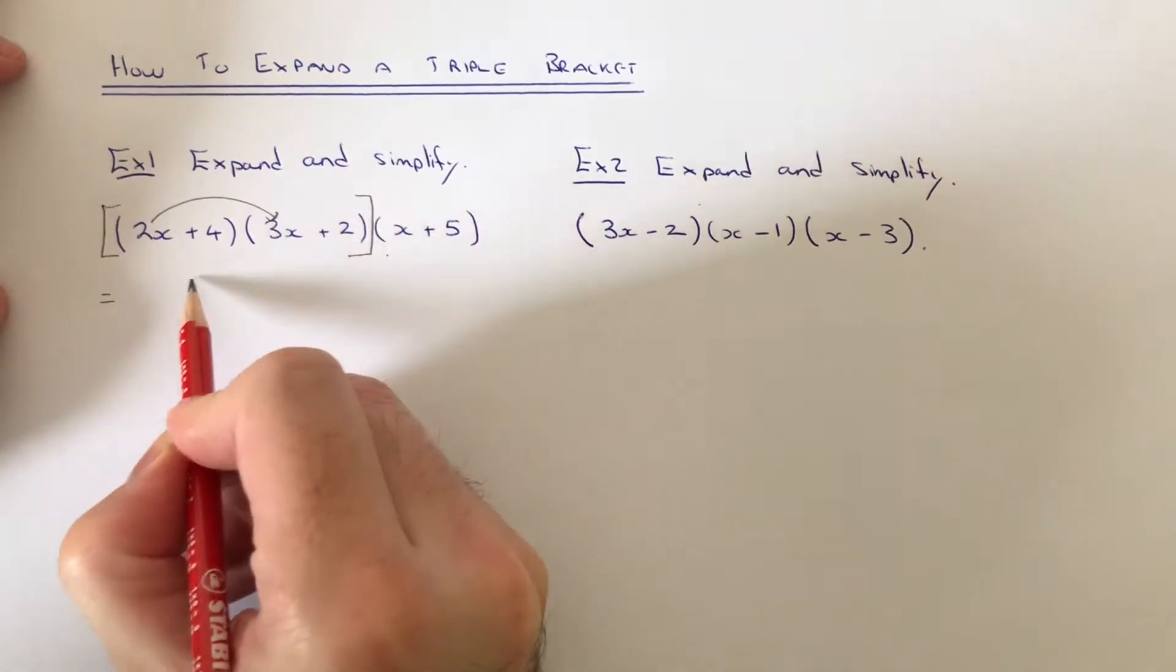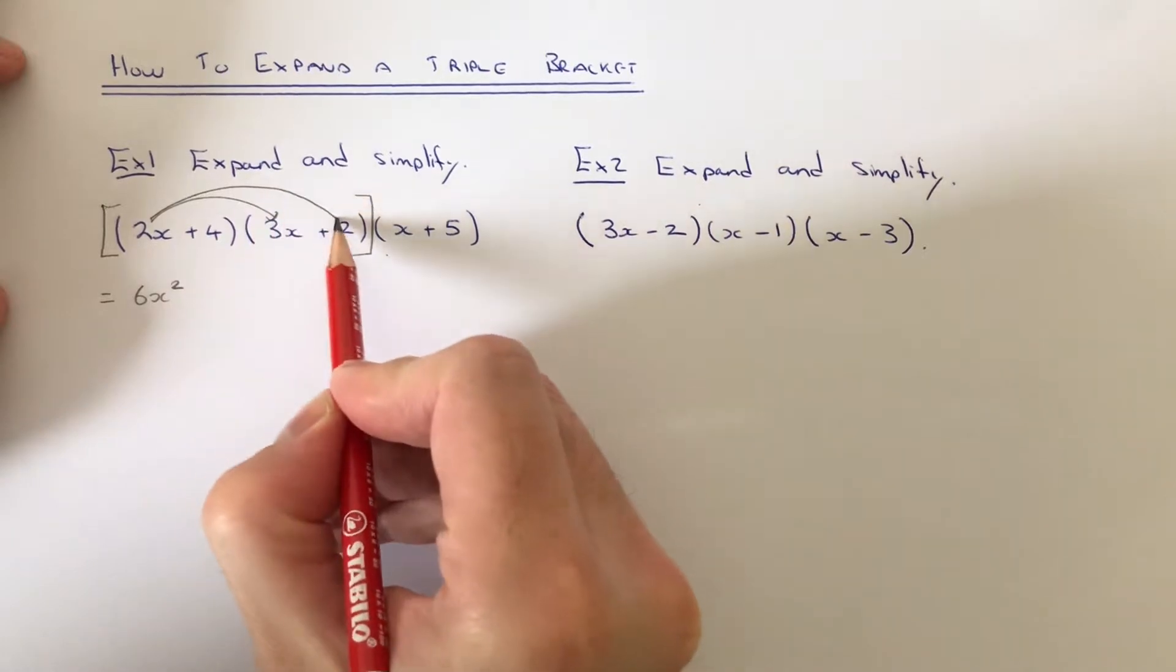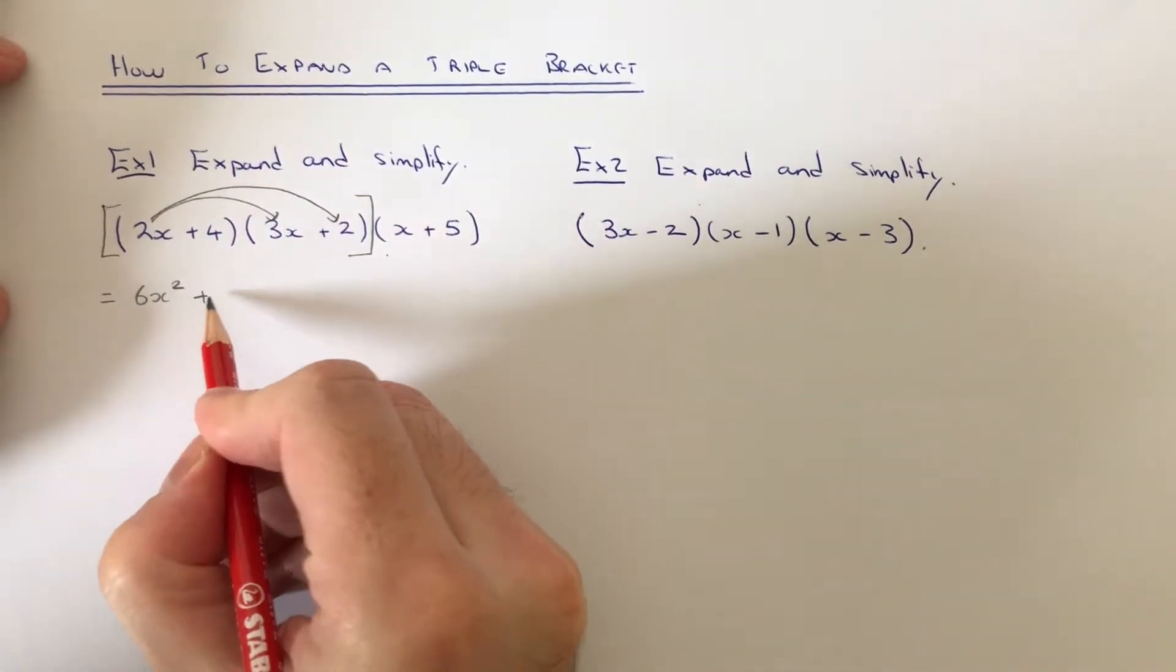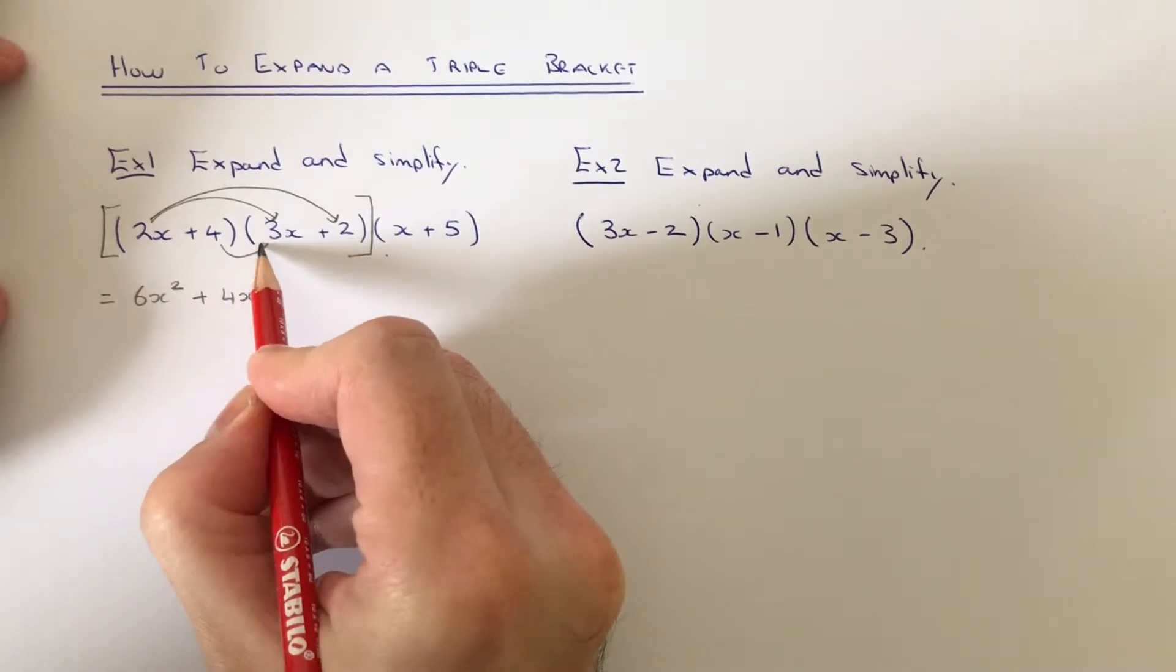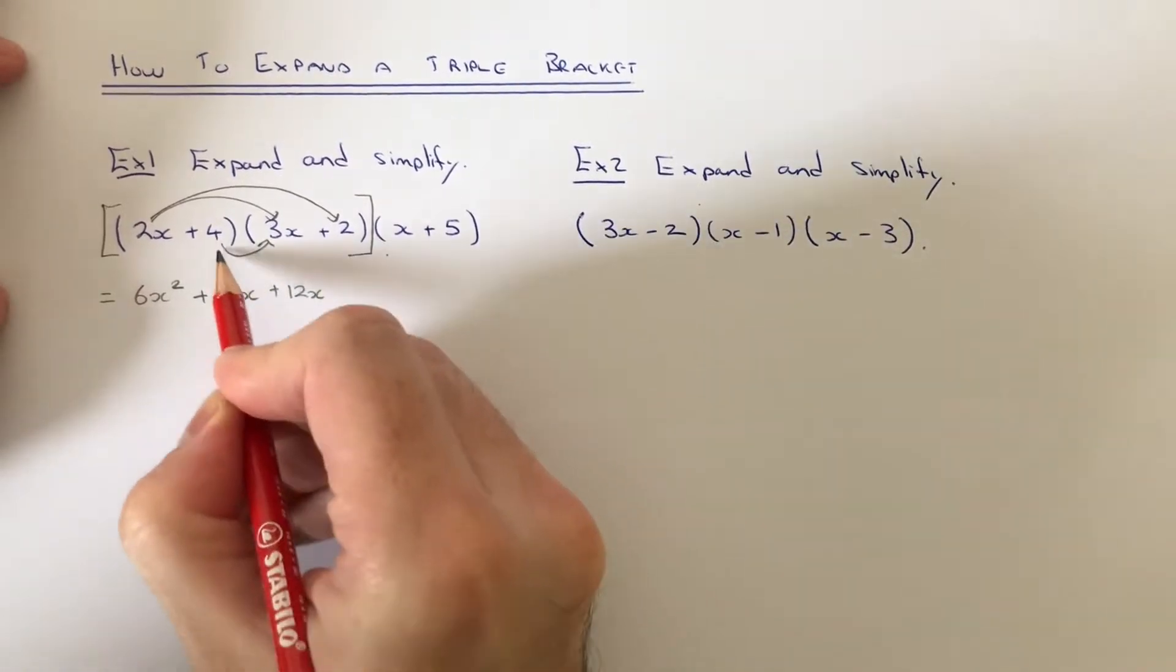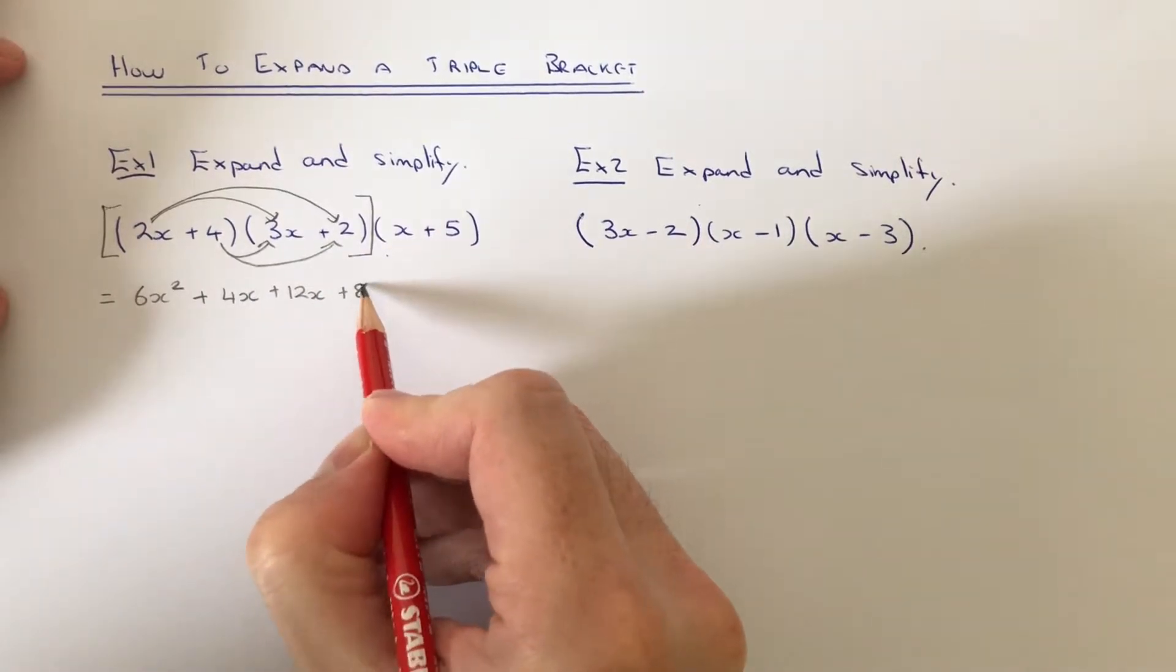2x times 3x is 6x squared. 2x times 2 is 4x. 4 times 3x is 12x. 4 times 2 is 8.